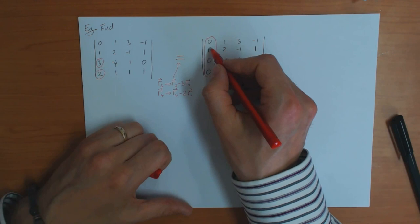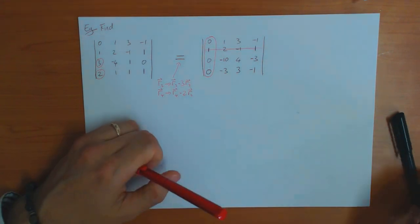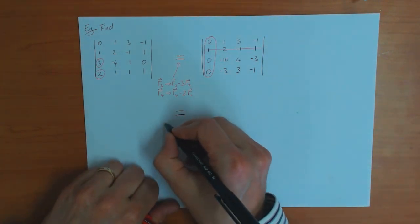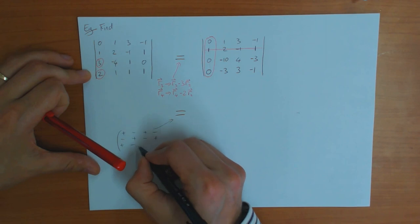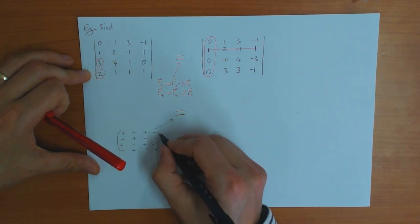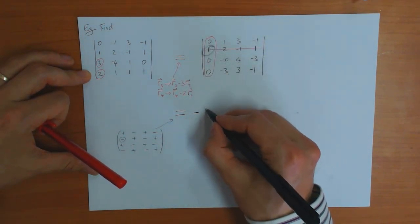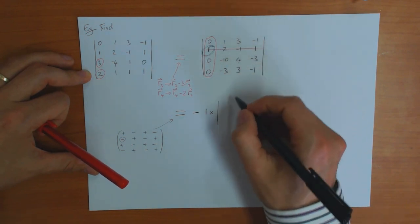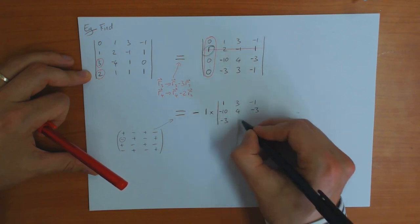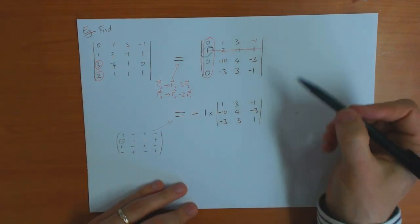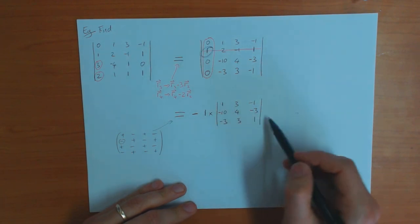Now I can use the method of expanding along the column with lots of zeros. I'm only interested in the one non-zero entry here, so looking at the chessboard sign — this position has a minus sign, so I multiply by minus. It equals 1 times the determinant of the 3 by 3 matrix: 1, 3, minus 1 in the first row; minus 10, 4, minus 3 in the second; minus 3, 3, 1 in the third. Instead of calculating four 3 by 3 determinants, using this theorem I only need to calculate one.